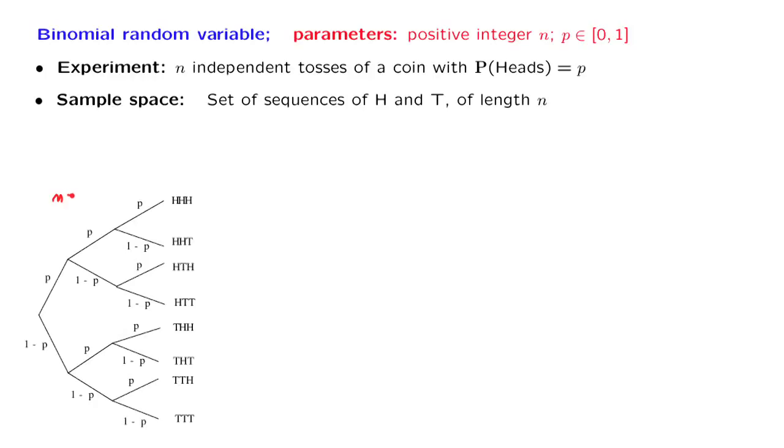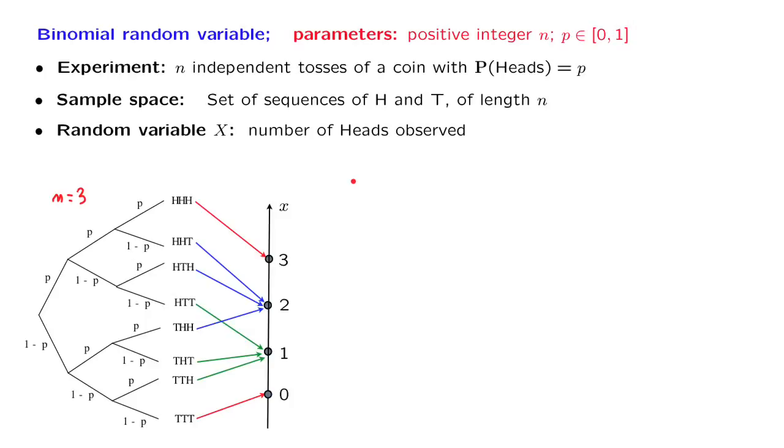In this diagram here, we took n to be equal to 3. We can now define a random variable associated with this experiment. Our random variable that we denote by capital X is the number of heads that are observed.